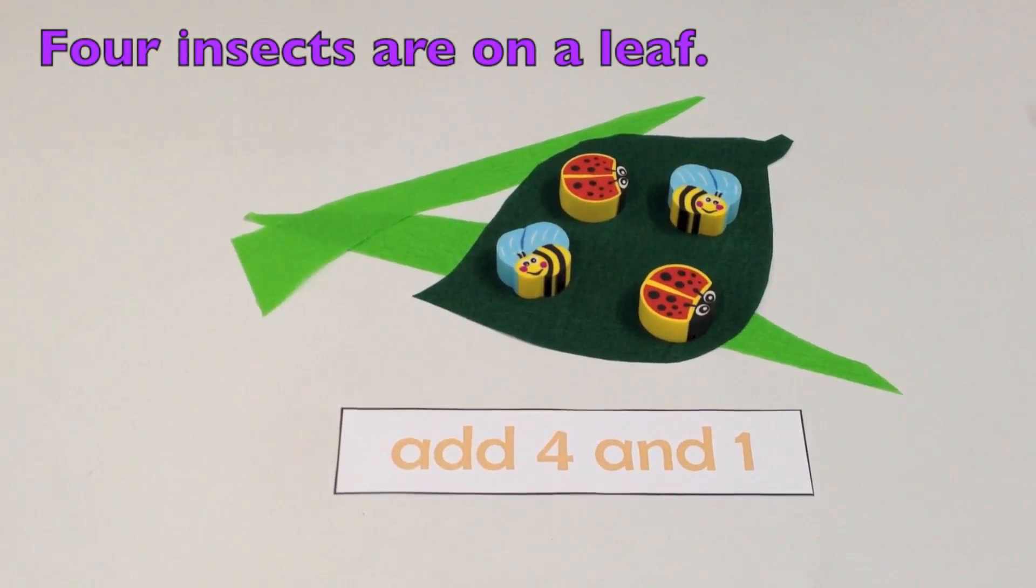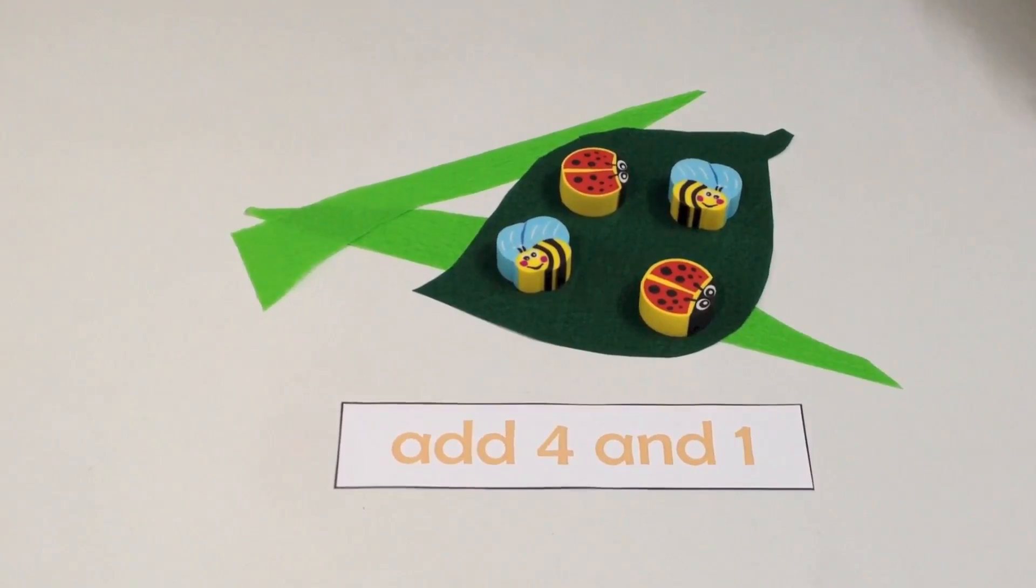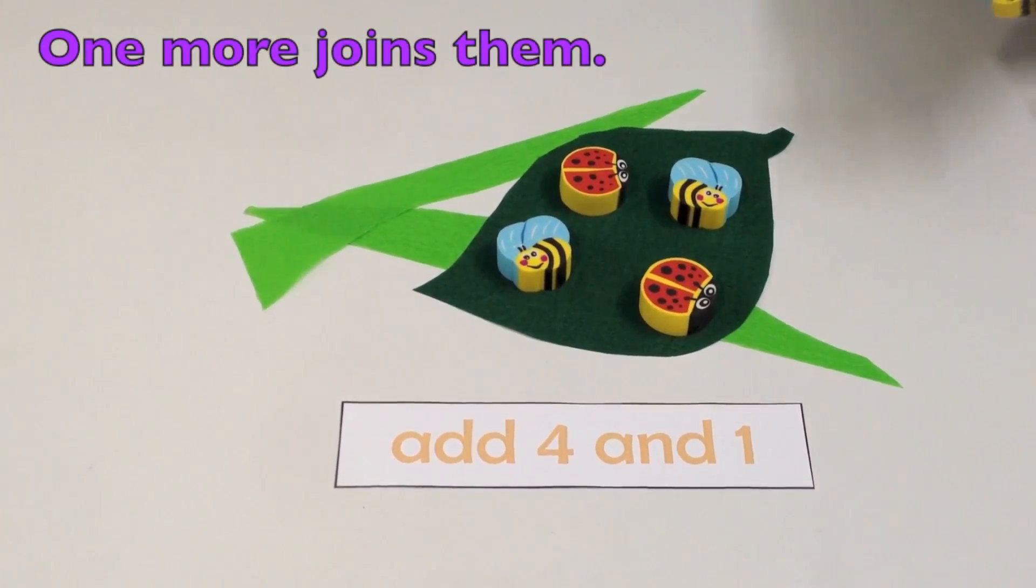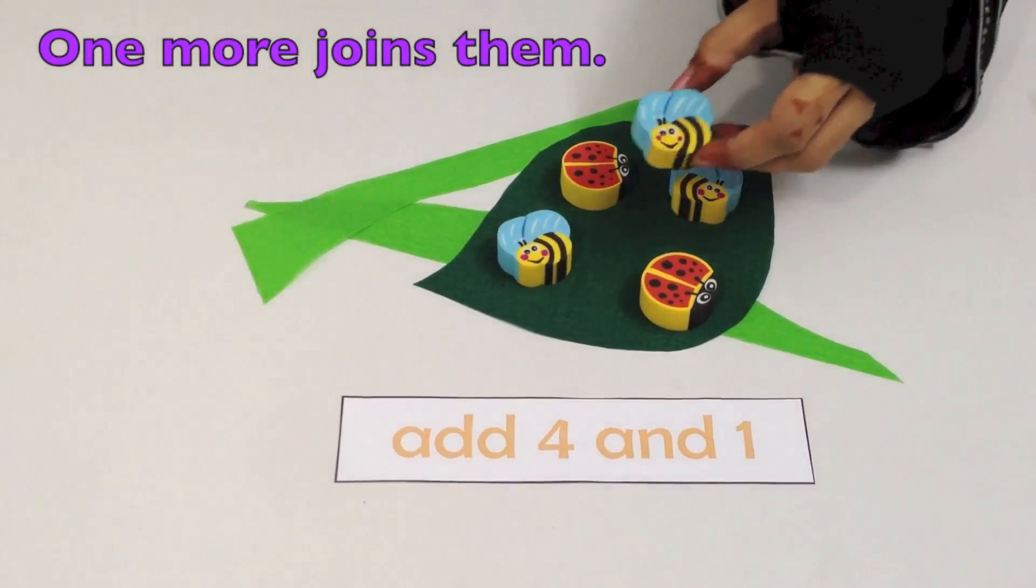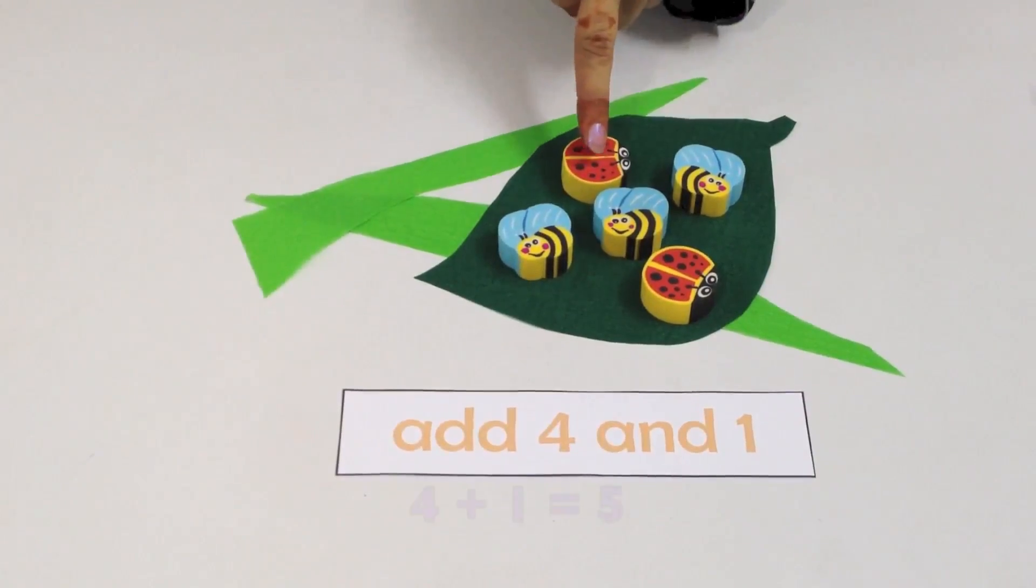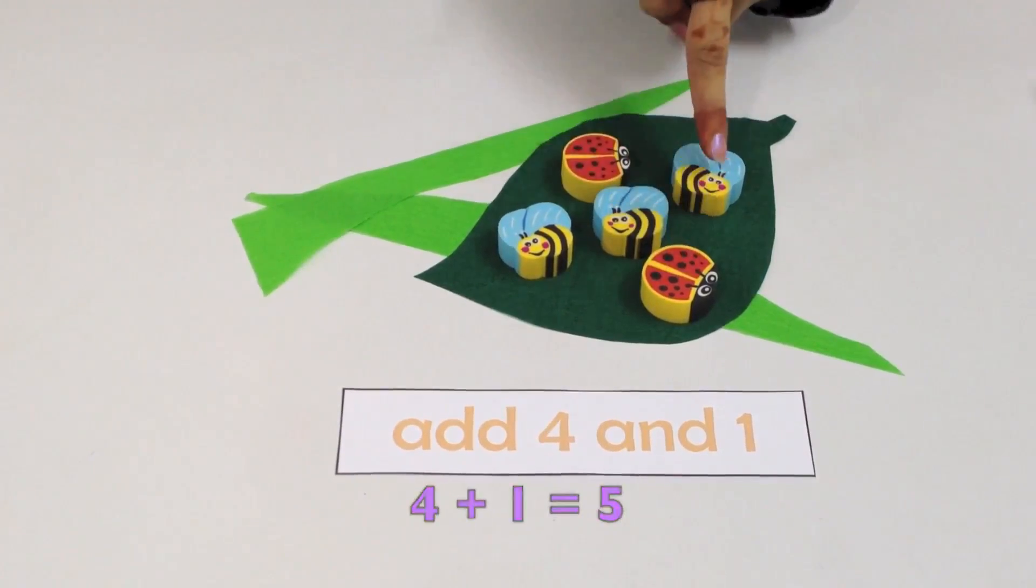On a leaf, there are four insects. After some time, you see another bumblebee coming and joining the four insects: one, two, three, four, five.